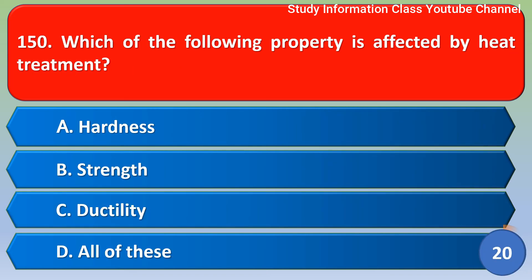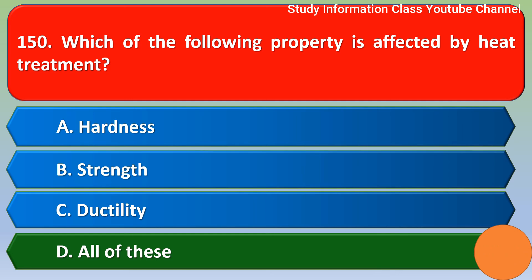Next question: Which of the following properties is affected by heat treatment? Option A: hardness, Option B: strength, Option C: ductility, Option D: all of these. The correct answer is Option D, all of these.